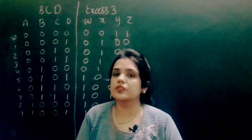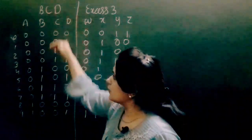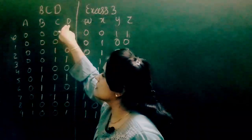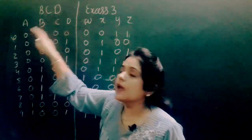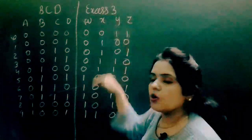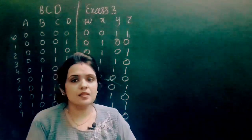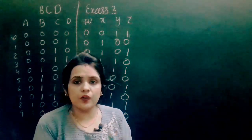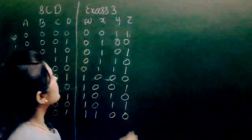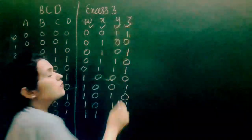Now we have to design a circuit which can convert a given BCD number to an XS3 number. These are our inputs and these are our outputs. There will be four input lines — A, B, C, D — and there will be four output lines as well: W, X, Y, Z. To design the circuit, we obviously need output functions so that we can draw a circuit equivalent to those functions. Our outputs W, X, Y, and Z all depend on the input values A, B, C, D.